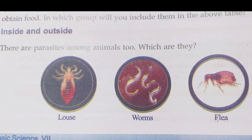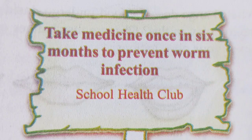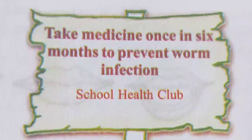There are parasites among animals too. Louse and flea are external parasites, but the worm is an internal parasite. They harm the health of the organism in which they live. It is essential to take medicine once in six months to prevent worm infection.